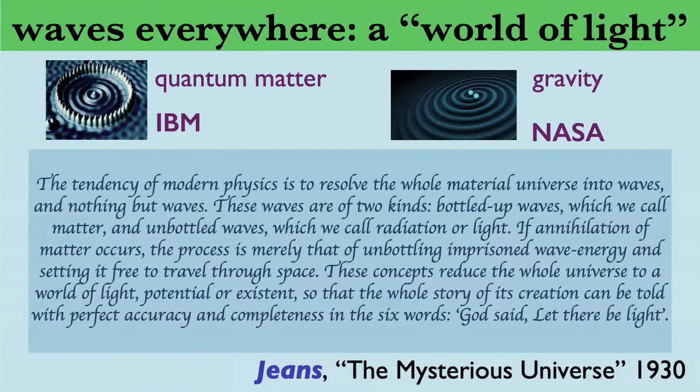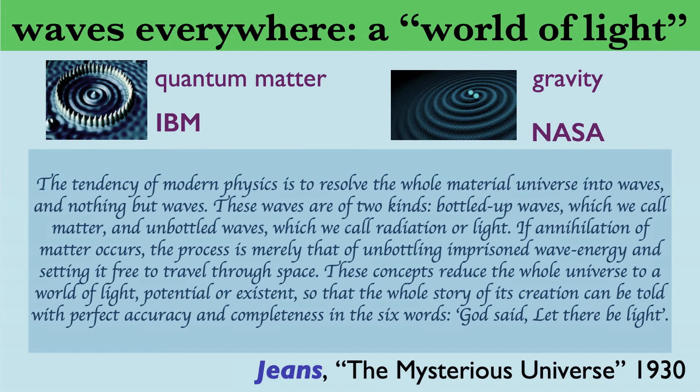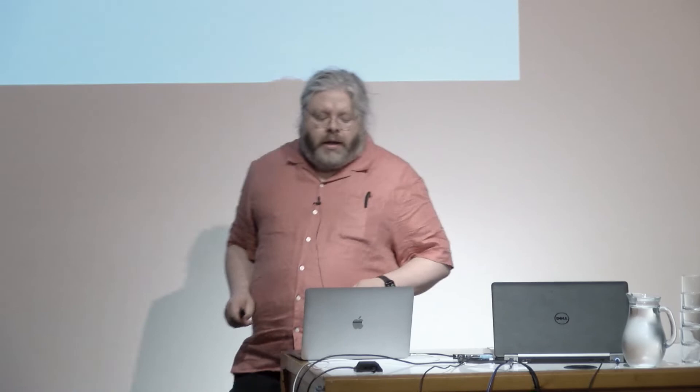Now we've got waves everywhere — from quantum mechanics to gravity. Here's James Jeans in 1930: 'The tendency of modern physics is to resolve the whole material universe into waves, and nothing but waves. Waves are of two kinds: bottled-up waves, which we call matter, and unbottled waves, which we call radiation and light. We can reduce the whole universe to a world of light. The whole story of creation can be told with perfect accuracy and completeness in six words: God said, let there be light.' I don't quite agree with that, but I won't say more about light waves.